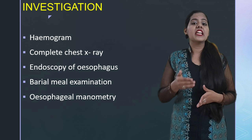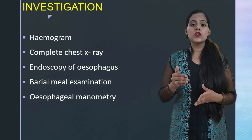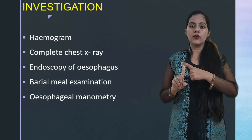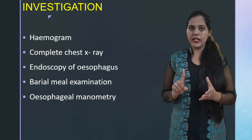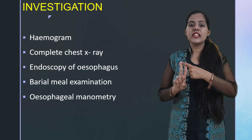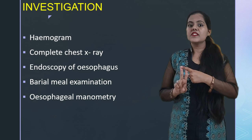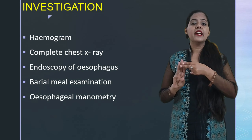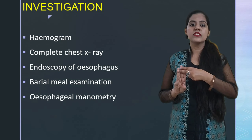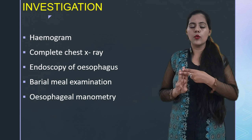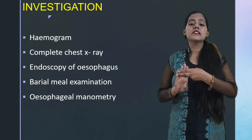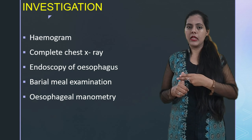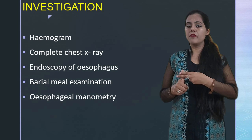Now the investigations for dysphagia. The first investigation is a complete hemogram to find out the hemoglobin level and detect whether anemia is present. Second is a complete chest X-ray to find out any pneumonic condition, tuberculosis, or any kind of enlargement. Third is endoscopy of the oesophagus to find any lesion within it. Fourth is barium meal examination. Fifth is oesophageal manometry to find out the location of the lesion.